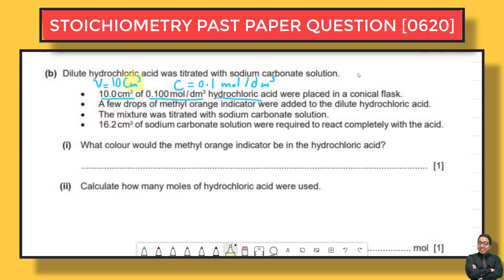A few drops of methyl orange indicator — which changes color depending on the medium — were added to the diluted hydrochloric acid. The mixture was titrated with sodium carbonate solution, and 16.2 cm³ of sodium carbonate solution were required to react completely with the acid. So V(Na₂CO₃) = 16.2 cm³, which we'll also need to convert.